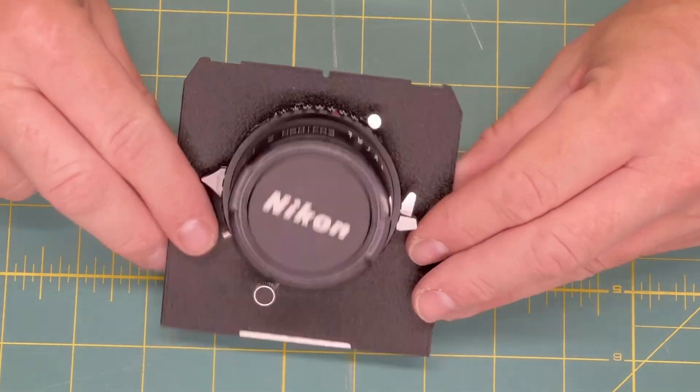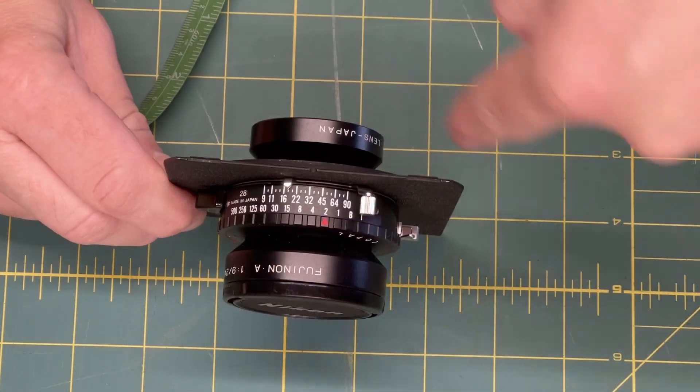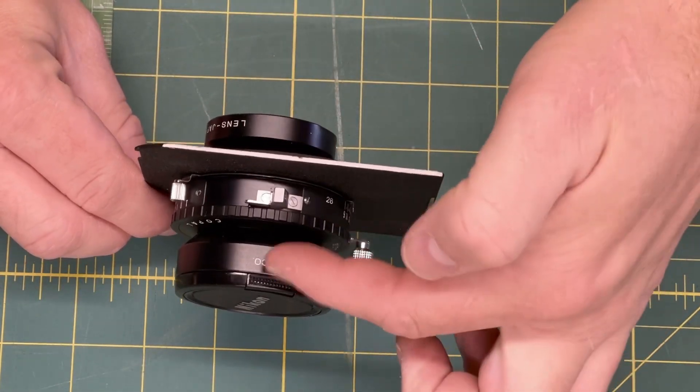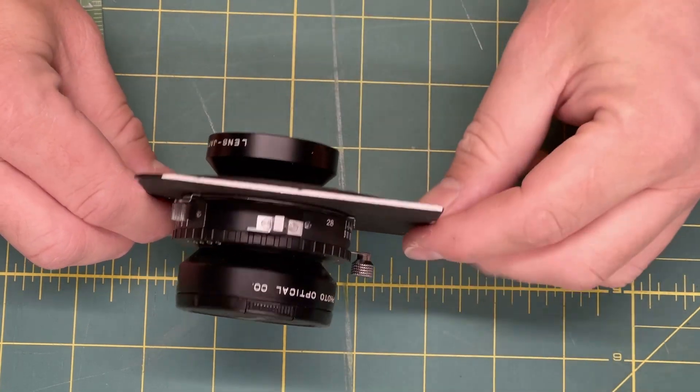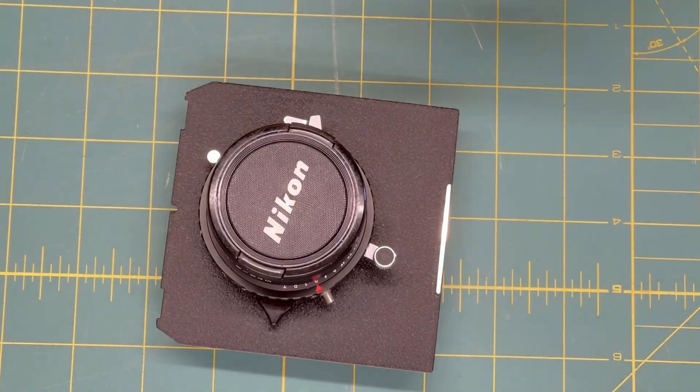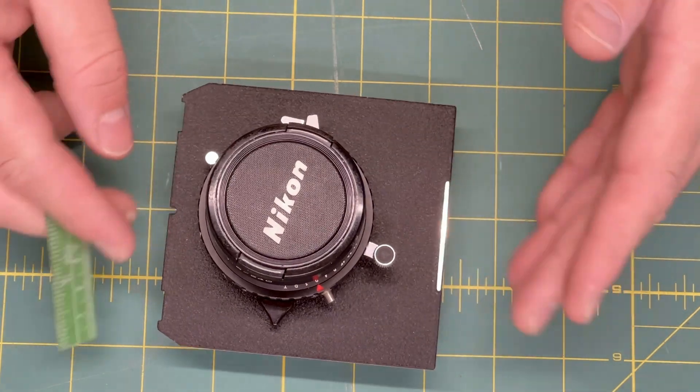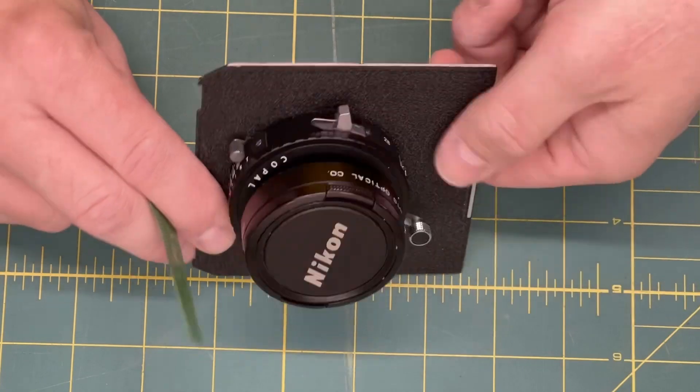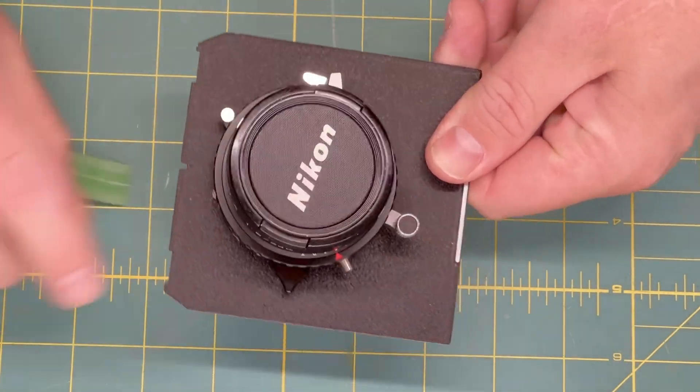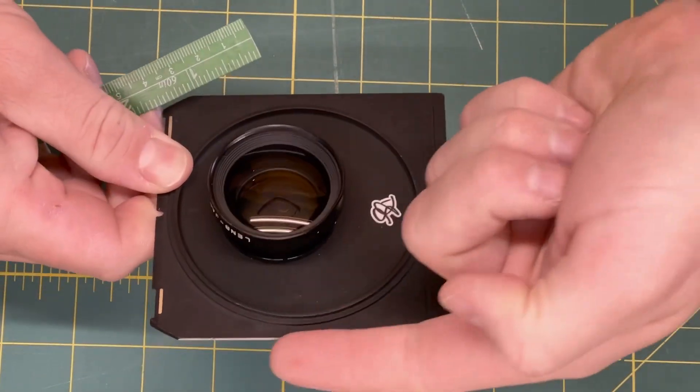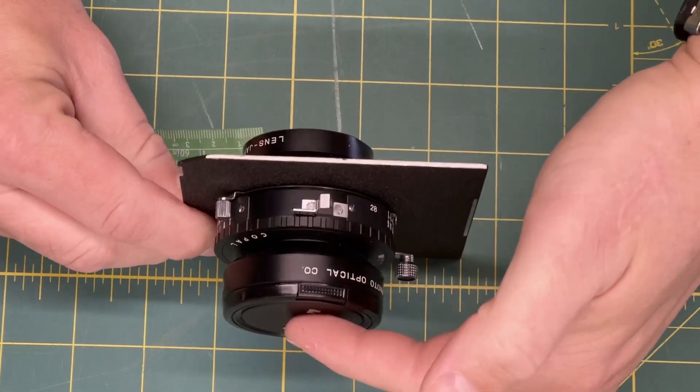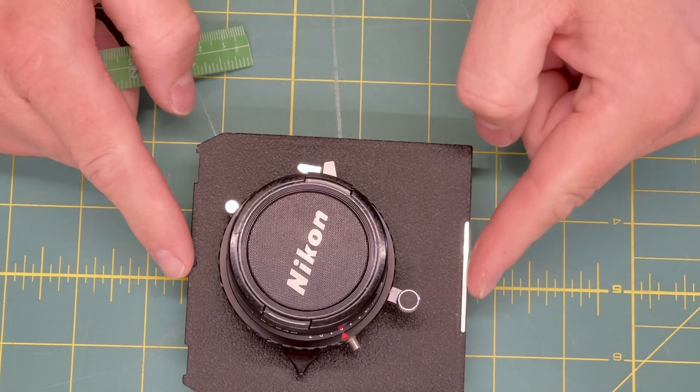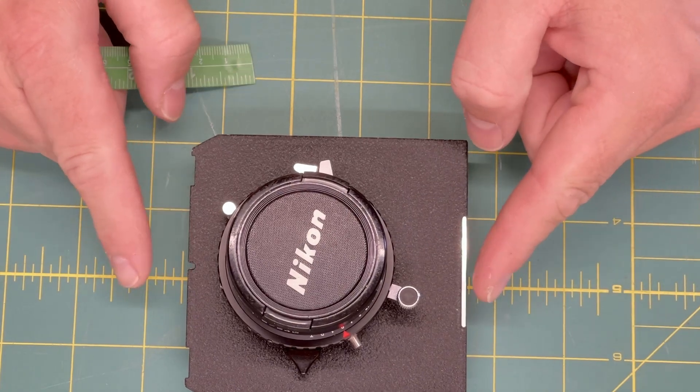You're basically measuring the circumference of a lens around like this. Some lens boards are not perfectly square, some lenses are offset, so they're not perfectly in the center. What you're going to do is take the largest circumference measurement. Remember, you're not going like this, you're going around from the front to the back of the lens, but you want to make sure you're using the largest dimension just in case one is larger.